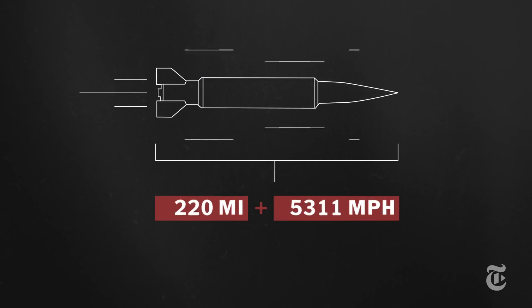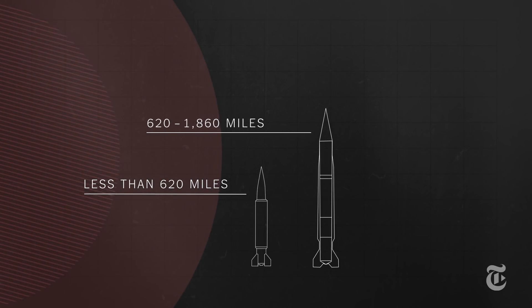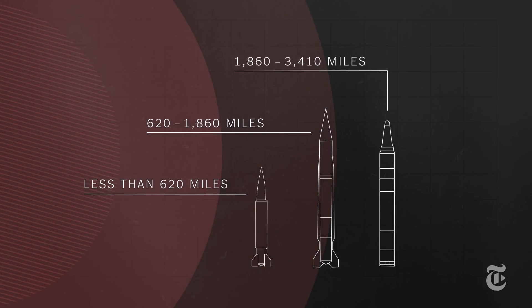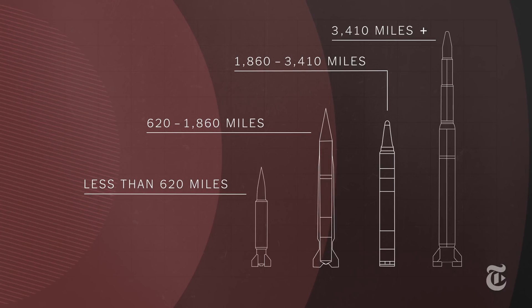For starters, how far and how fast a missile can go varies widely. There's short range, medium range, intermediate range, then of course, the Intercontinental Ballistic Missile, or ICBM.